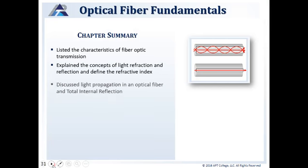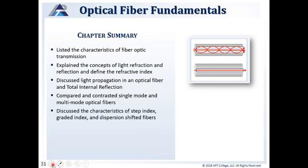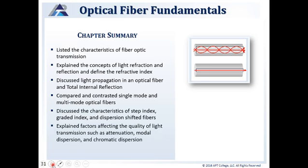In this chapter, we listed the characteristics of fiber optic transmission, explained the concepts of light refraction and reflection and defined the refractive index, discussed light propagation in an optical fiber and total internal reflection. We compared and contrasted single-mode and multimode optical fibers, discussed the characteristics of step-index, graded index, and dispersion shifted fibers. We explained the factors affecting the quality of light transmission such as attenuation, modal dispersion, and chromatic dispersion, and we explained the use of mode conditioners.